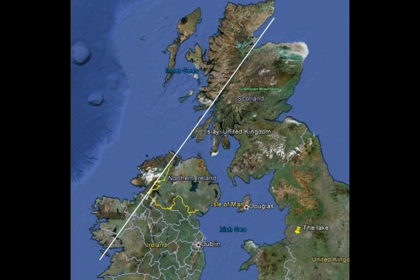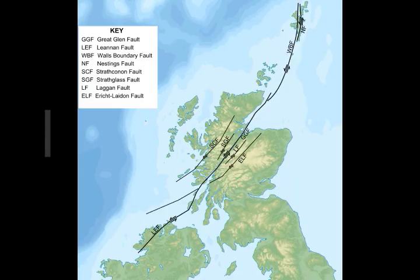The Great Glen Fault extends further southward in a straight line through Loch Linnhe and Firth of Lorne. There are a lot of lochs there, and as you can see in the map, it goes through Northern Ireland as well, extending through Lough Swilly, Dunnagle Bay, and Clew Bay as the Leannan Fault. The northeast fault connects to the Walls boundary associated with the Melby Fault.